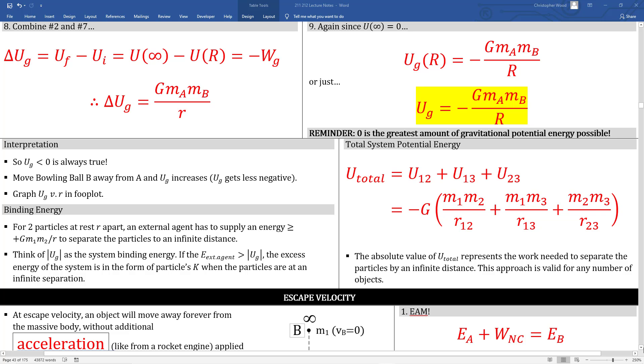Here are some key takeaways. Gravitational potential energy is always less than zero. It's always a negative number except for the extreme case when the two objects are located infinitely far apart. As bowling ball B moves further away from bowling ball A, the gravitational potential energy increases, meaning it gets less negative. Binding energy refers to some external agent that supplies the energy needed to keep the constituent objects infinitely far apart from each other. So for example, to separate bowling ball A and bowling ball B by an infinite distance, some external agent, me for example, needs to separate those bowling balls, otherwise they would naturally come towards each other.